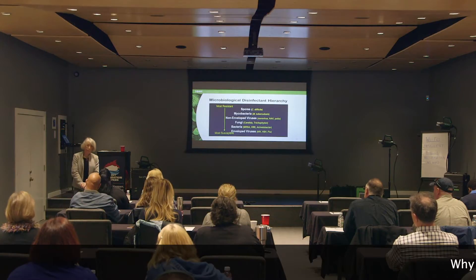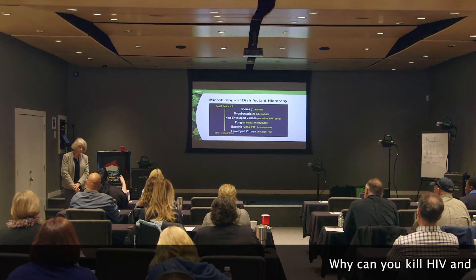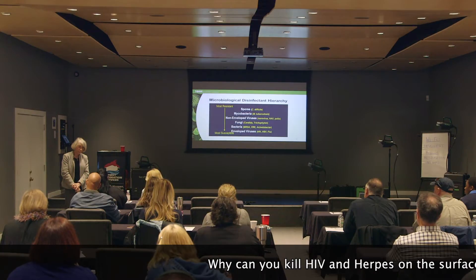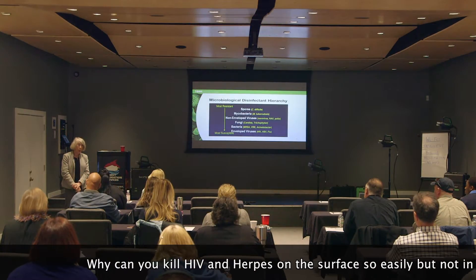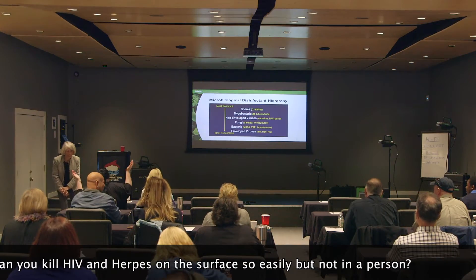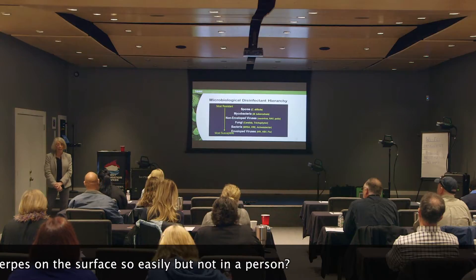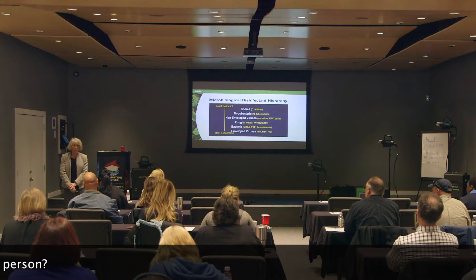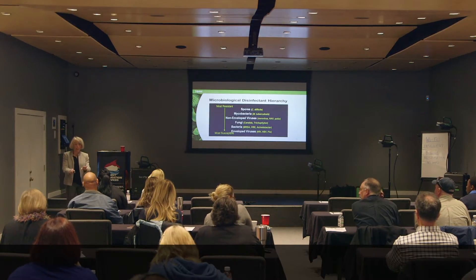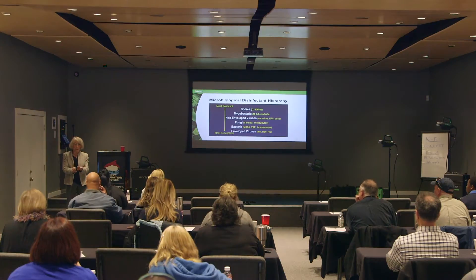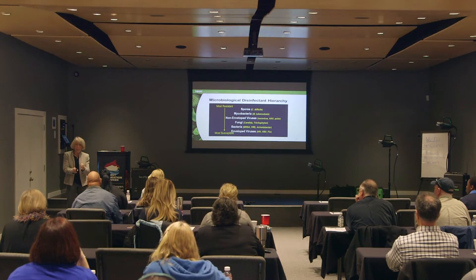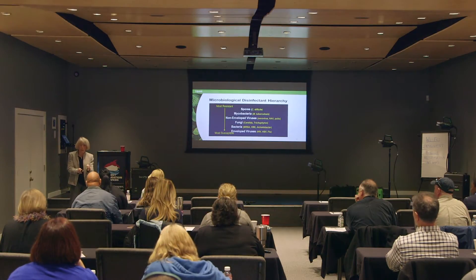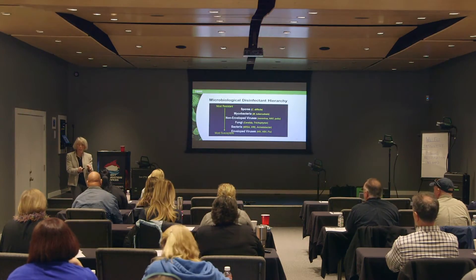Question from the audience: How come you can kill HIV and herpes so easily on the surface, but you can't get rid of them in a person? Well, that's a loaded question. It has to do with how HIV is replicated. HIV is a retrovirus, meaning it's an RNA virus. That RNA virus turns into a DNA, and that DNA is incorporated into your genome. Once it incorporates into your genome, you can't get rid of it — the CD4 cells are primarily destroyed.